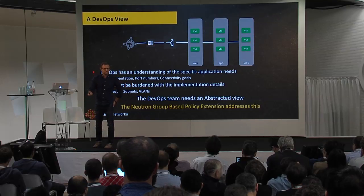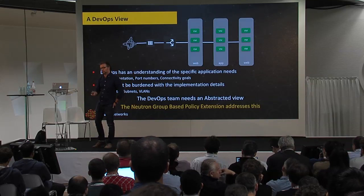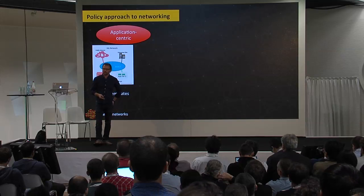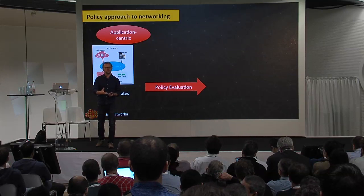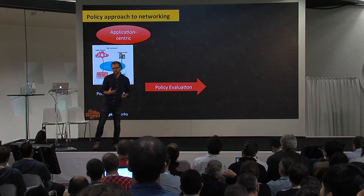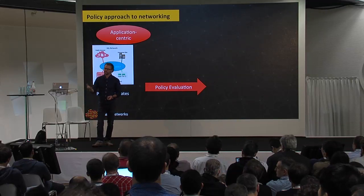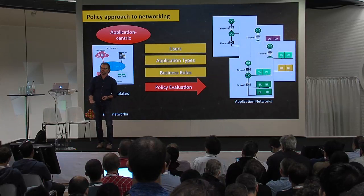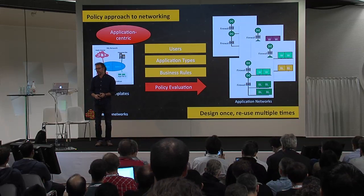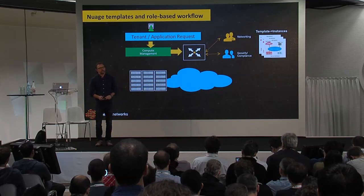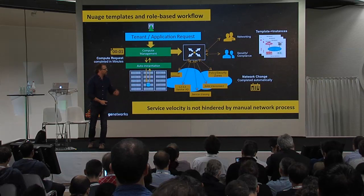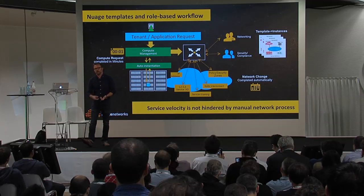The Neutron group-based policy extension will be available in a later Juno release. The Nuage guys have been contributing to this and shipping product that provides these functionalities for about a year and a half. This policy approach to networking — by policy I really just mean templates — lets me define my network service as a template. The network administrator creates those templates, the security audit team reviews them for compliance, and then I just give those templates to my DevOps guys to deploy over and over through a simple API call. That's what policy-based networking is all about.